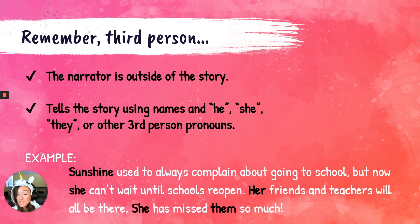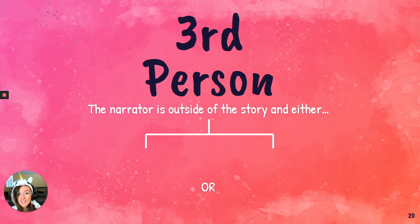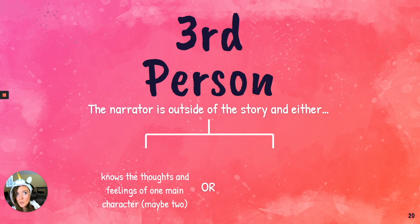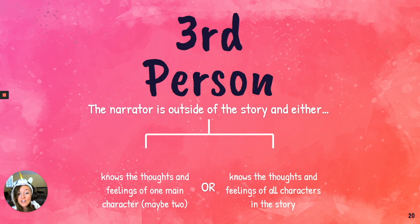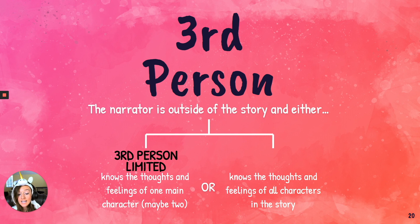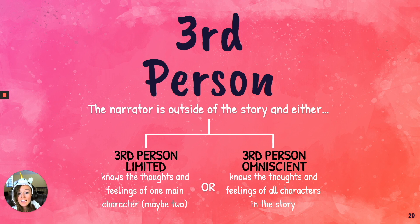With third person, there are two types we're talking about today. The narrator is outside the story, and either the narrator knows the thoughts and feelings of one main character or a couple main characters, or that third person narrator knows the thoughts and feelings of all of the characters in the story. If they focus on just one or a few main characters, we would call that third person limited — what they know is limited to just those characters. If the narrator knows what all of the characters are thinking and feeling, that would be third person omniscient — all-knowing.